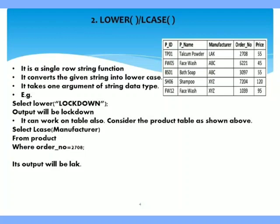Here we can write select LCASE manufacturer from product where order number equals 2708. Manufacturer for order number 2708 is, look at the table, it is LAK. So what will be displayed? LAK in small letters.